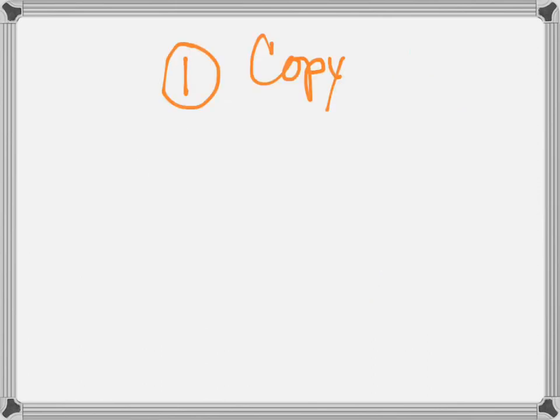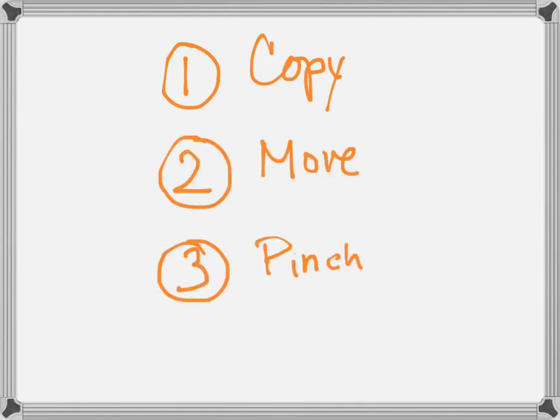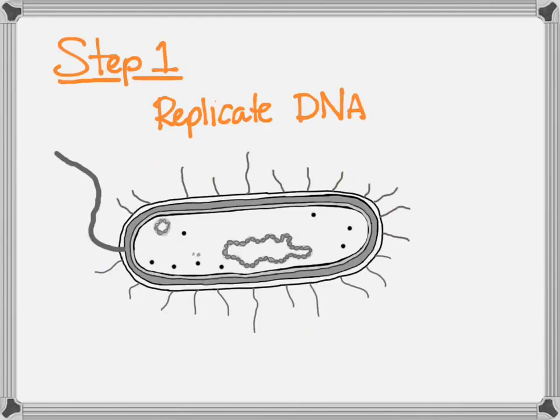Binary fission is a pretty simple process. It's four steps: copy, move, pinch, ta-da! In step one, bacteria copy — or the technical term is replicate — their DNA.